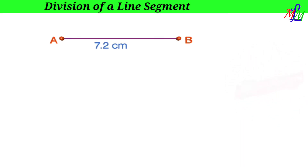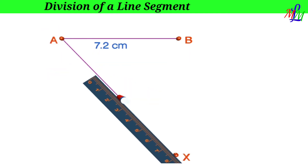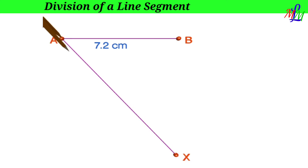Now we have to draw a ray AX such that it makes an acute angle with the line segment AB. Draw ray AX so that angle BAX is an acute angle.